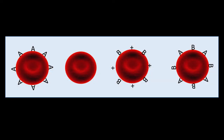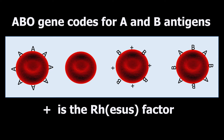In this image we have four red blood cells each displaying different potential antigens — we'll call them tags — on the surface. We have an A tag, one that has nothing on it, one with an A and a B tag, and one with positive tags. It turns out there are two different genes that code for these potential antigens: one gene is called ABO, and the other is called the rhesus factor or RH.